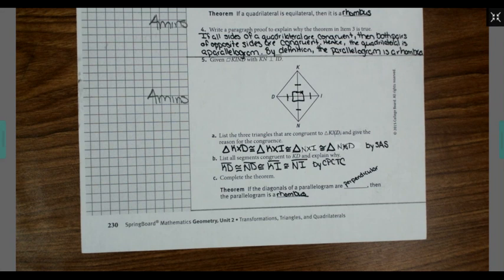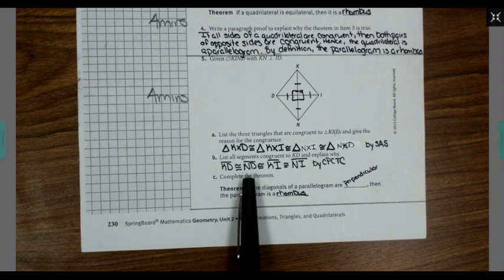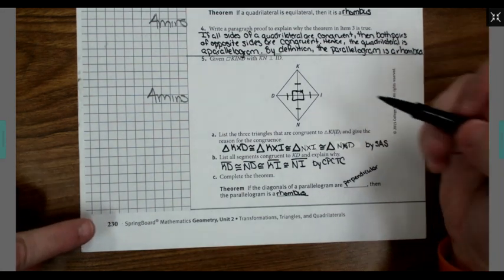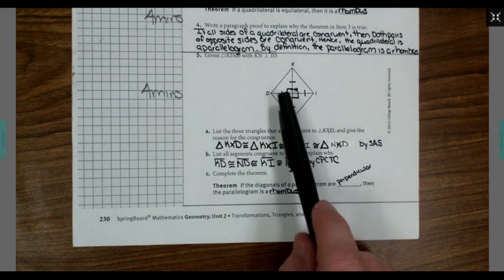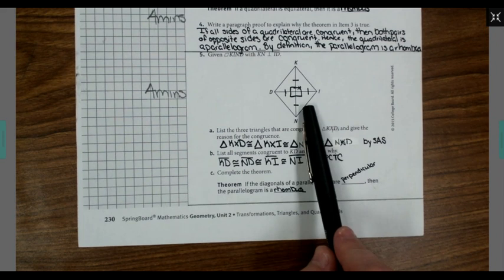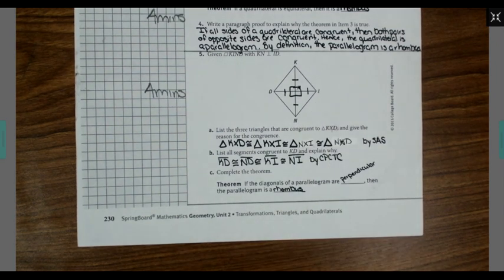Now, because of that, I can state that KD is congruent to ND, which is congruent to KI, which is congruent to NI. And that's because there are corresponding parts of congruent triangles being congruent.